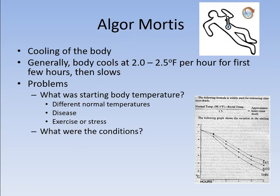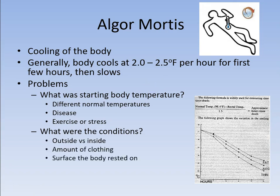Also, where were you when you died? If you were in a room with normal 70-something-degree room temperature, we can start working with the two to two-and-a-half degrees per hour figure. But were you outside or inside? How much clothing were you wearing? What were you laying on — something cold or something warm? Was there something to artificially warm or cool your body after death? If you perish in a house and an hour later the heat comes on via an automatic setting, that could skew the cooling of the body.